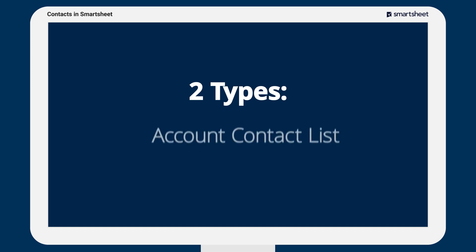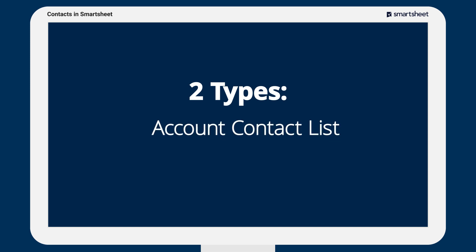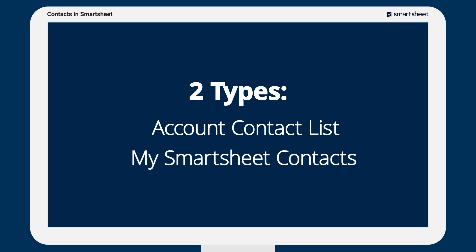The account contact list is the list of users enrolled in your Smartsheet account and is managed by your system administrator. My Smartsheet contacts is your personal contact list and can include both people within your organization as well as external people that you'd like to collaborate with.